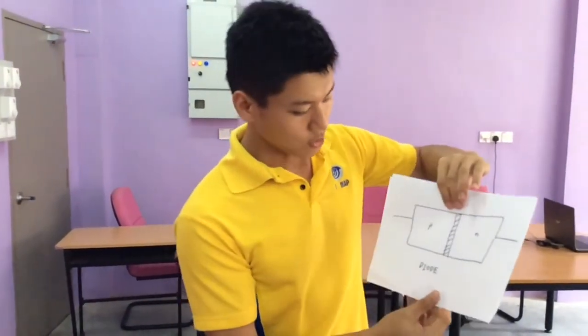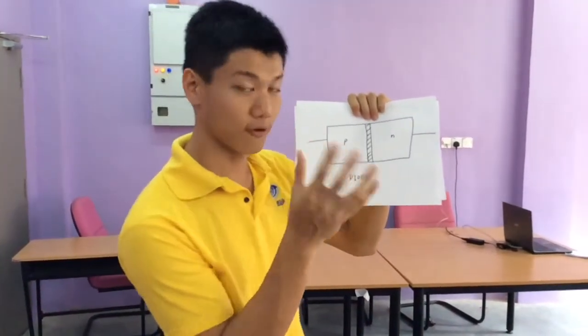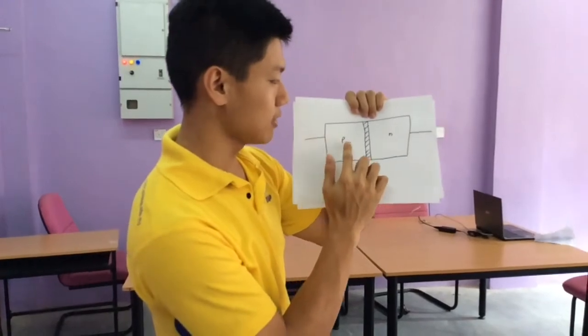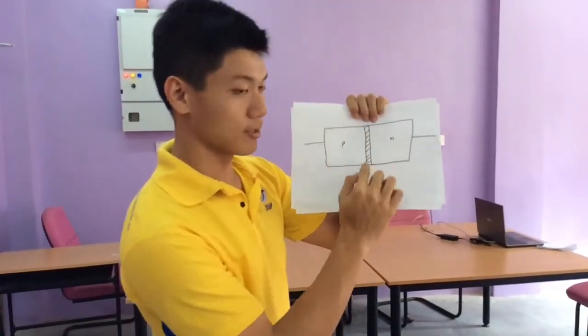To bias the diode, we should apply a DC voltage across the diode. So actually, this is a simple diagram of a diode. So for forward bias, the current can pass through from the P-region to the N-region. As long as it can pass through this P-N junction, it is considered as a forward bias.